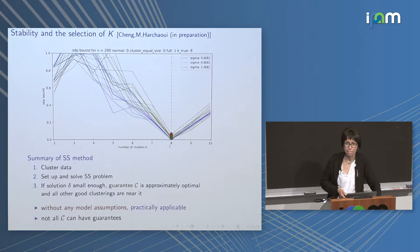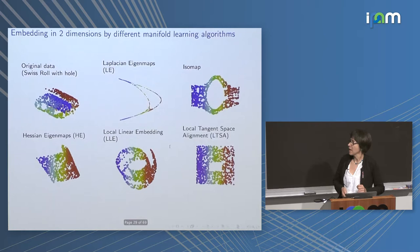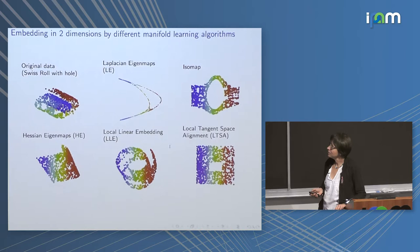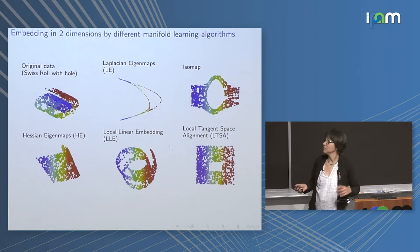Now I'll talk about dimension reduction by manifold learning. I'll assume each of you has at least heard of manifold learning and dimension reduction. If you're not familiar with Isomap or diffusion maps, think of t-SNE, UMAP, or even PCA — these methods all apply to what I'll discuss.